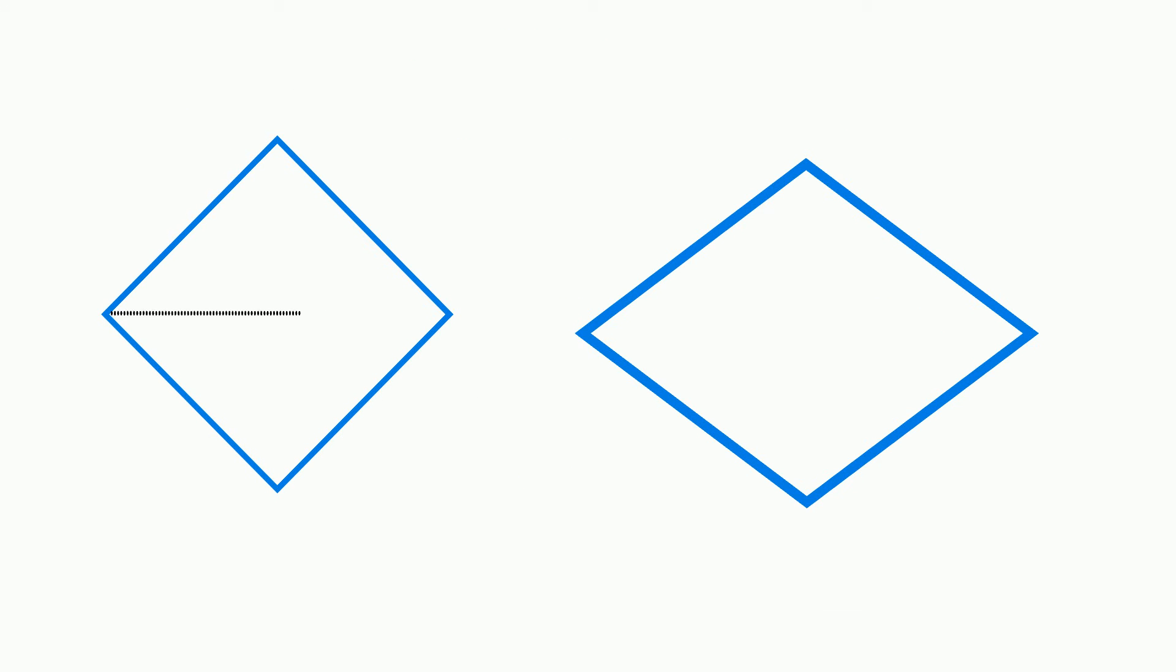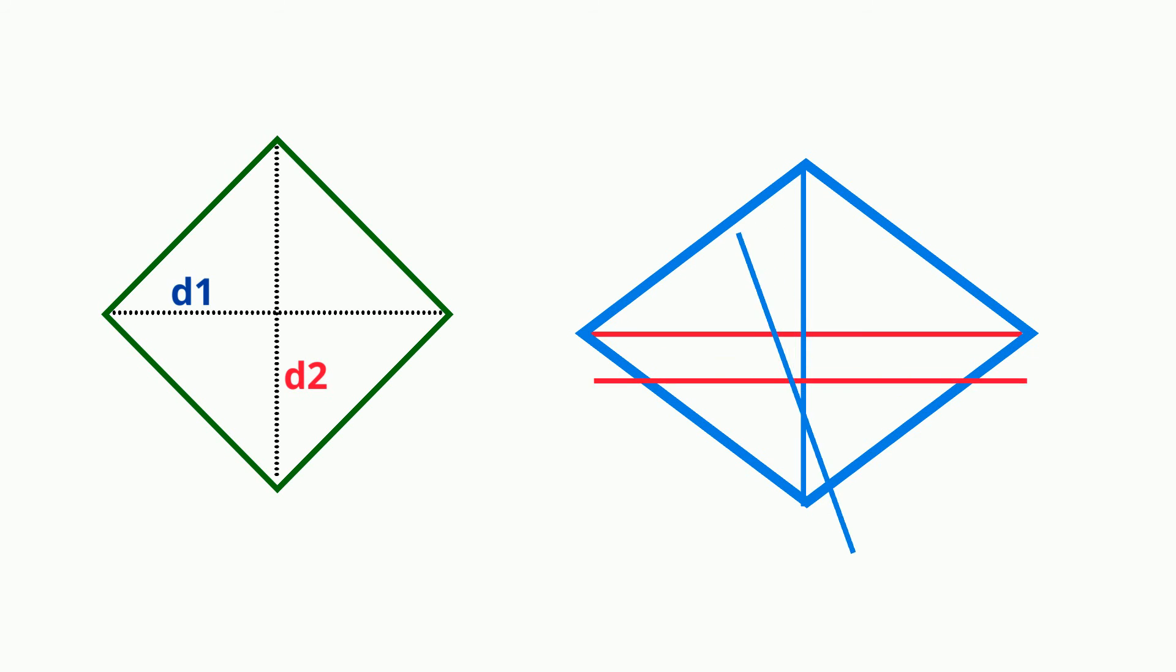The diagonals of a rhombus are perpendicular. They also create four congruent interior right triangles. The diagonals cut each other in half. In other words, they bisect each other. However, they don't always have to be the same length.